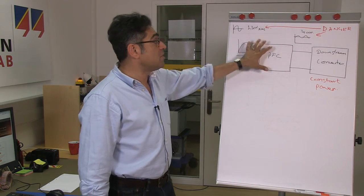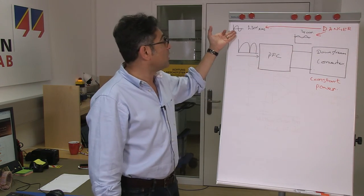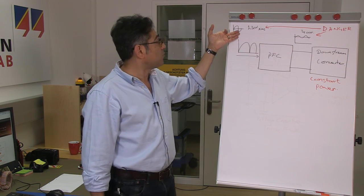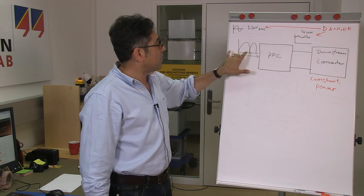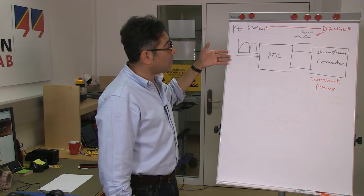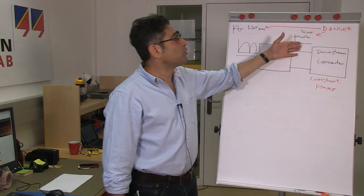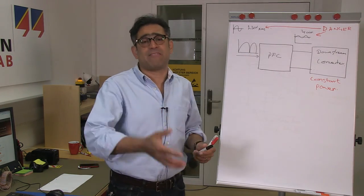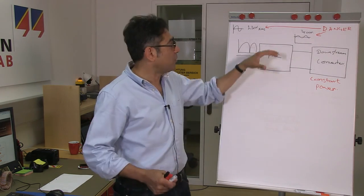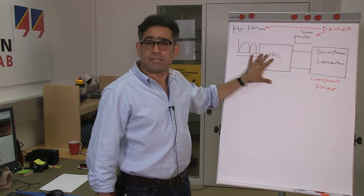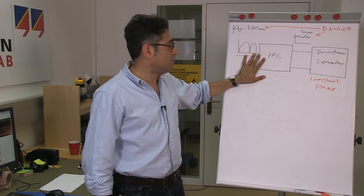Also please note that we are dealing with high voltages here. We start with a line voltage in Europe that will be 230 volts RMS, then it's rectified, so this is the rectified sine wave going into the PFC and the output of the PFC is typically around 385 or 400 volts. Please be aware of the dangers associated with using the high voltages.